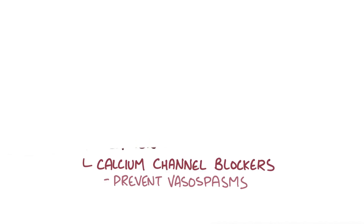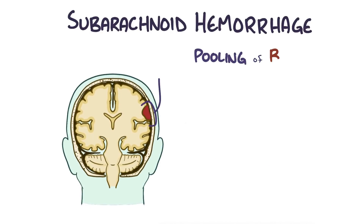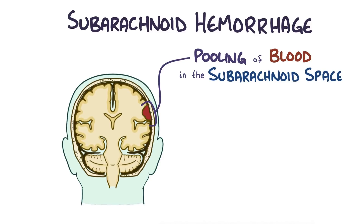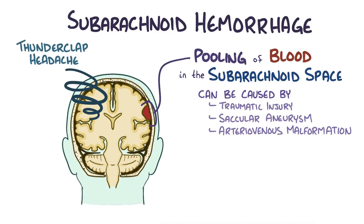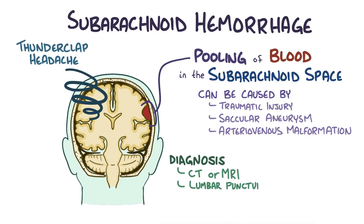As a quick recap, a subarachnoid hemorrhage is a pooling of blood in the subarachnoid space. It can arise due to a traumatic injury like hitting your head, having a pre-existing saccular aneurysm burst, or from a pre-existing arteriovenous malformation that bursts. Usually there's a sudden and severe thunderclap headache, described as the worst headache of a person's life. Diagnosis is usually done with a CT or MRI showing blood in the subarachnoid space and blood in a lumbar puncture. Treatment is done by surgical clipping or coiling.